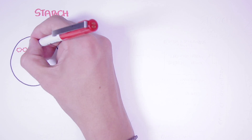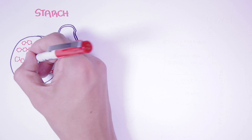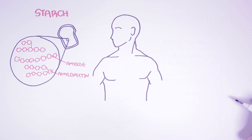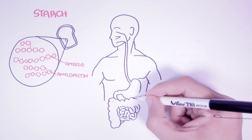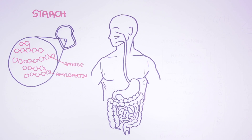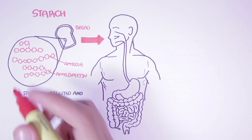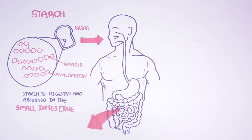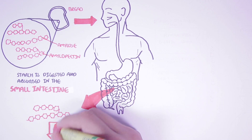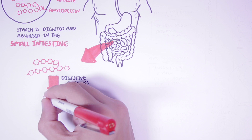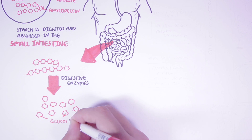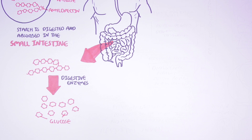Here we have bread, which contains starch — it contains amylose and amylopectin. The amylose and amylopectin, the starch, is digested and absorbed predominantly by the small intestine. Within the small intestine, the starch will encounter digestive enzymes which break it down into glucose molecules. However, in reality starch is digested at different rates: a portion can be digested quickly, another portion slowly, and another can resist digestion in the small intestine altogether.